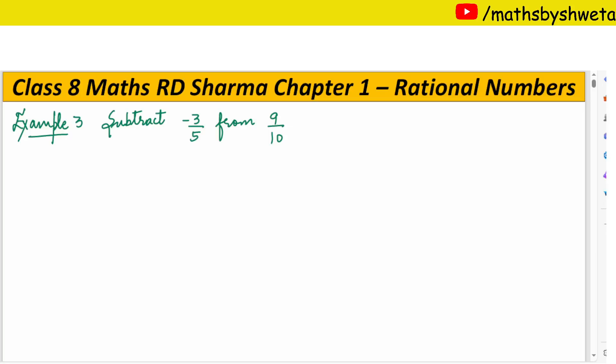Hello children, today I am going to give you a book of Maths, latest edition of R.D. Sharma. Chapter 1 is Rational Numbers. I am going to give you example number 3. Examples 3, 4, 5 - today we will give you 3 examples.